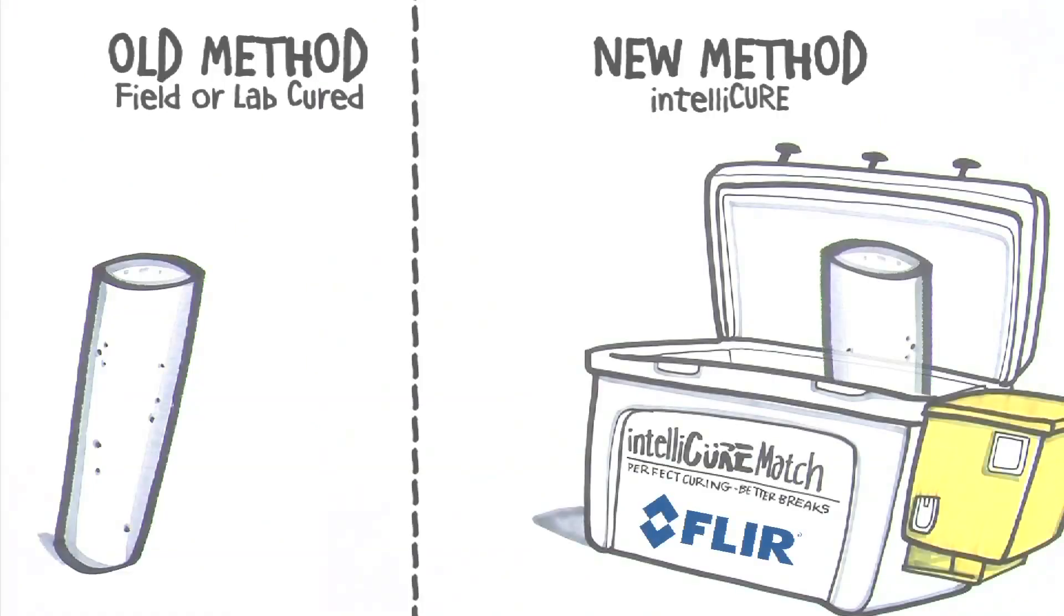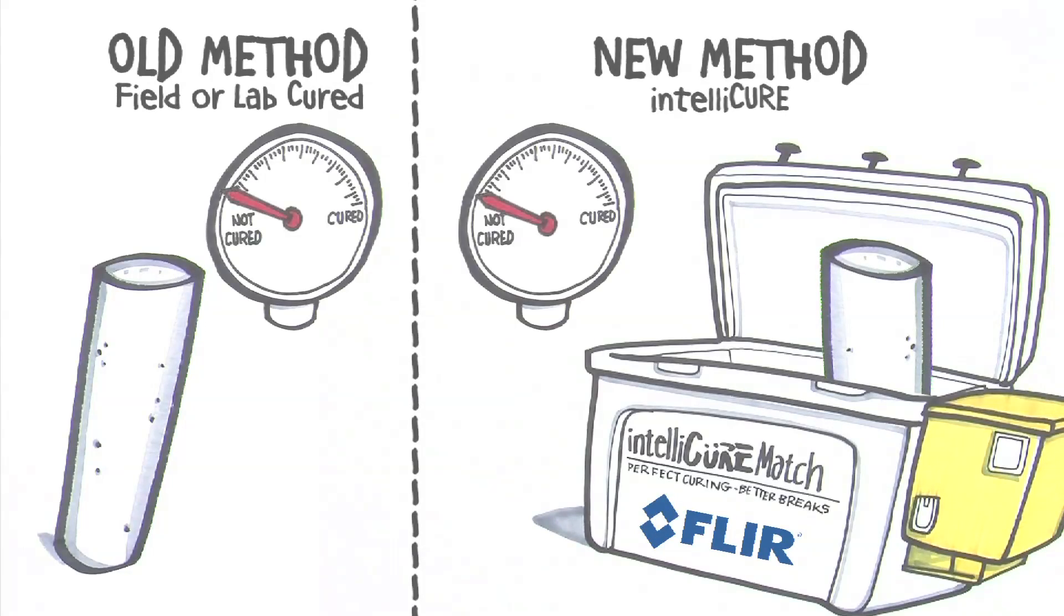Field or lab cured cylinders are typically kept at a constant 73 degrees. You're losing time when your bridge is warmer, since concrete gains strength faster with a higher temperature. IntelliCure match sets the temperature for your cylinders to match the bridge, so you know the moment your project's concrete is cured.